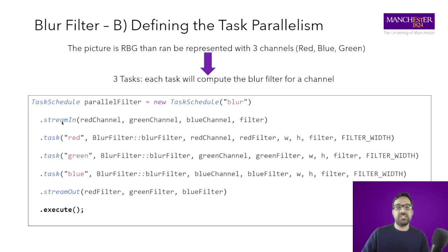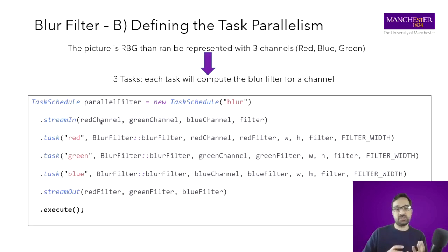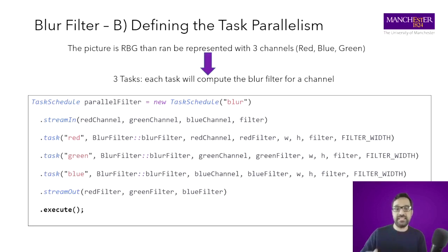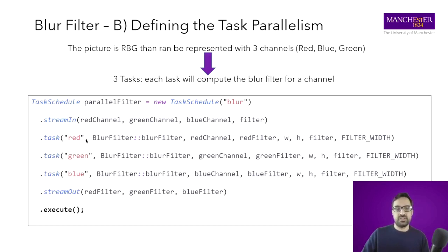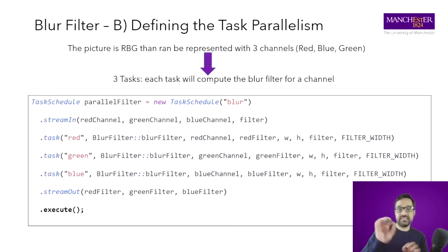Then you have a set of tasks: tasks for the red filter, green channel, and blue channel. Tasks are defined by passing a name — useful because you can direct specific tasks to specific devices by name from the command line — and then a function or method pointer in the form class.method, followed by the normal parameters for the method call. The method has six parameters, and those are expressed here as in any other method call. Then we call execute.